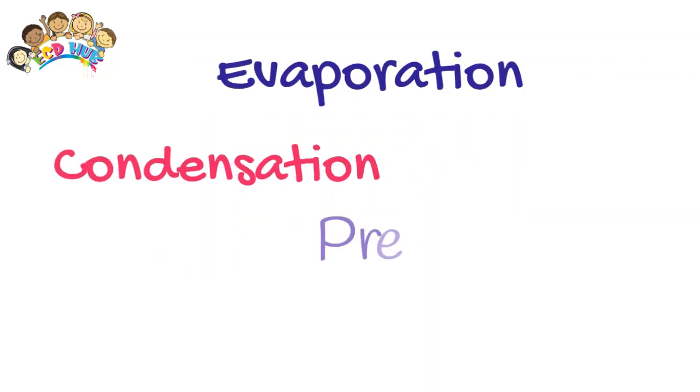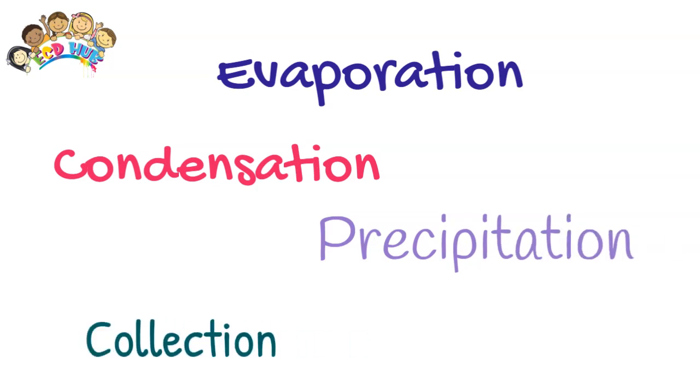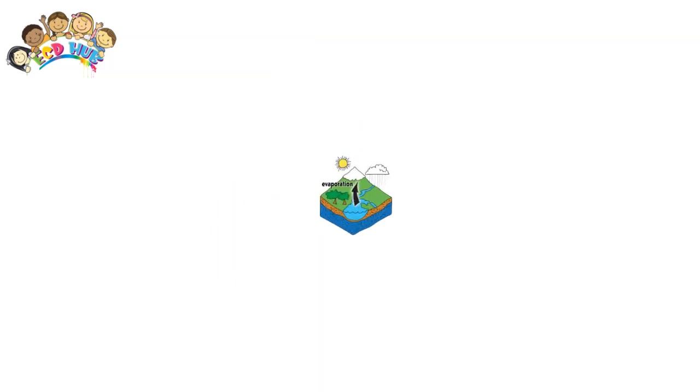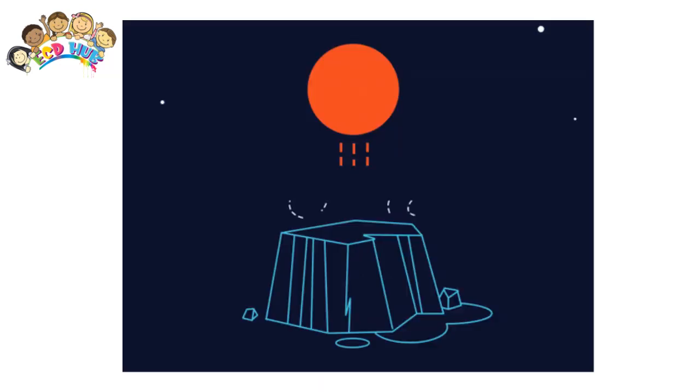Evaporation: When the Sun heats the surface of seas, lakes, rivers and streams, some of the water changes state and becomes water vapor, mixing with the air. Warm air rises, so the water vapor rises too.